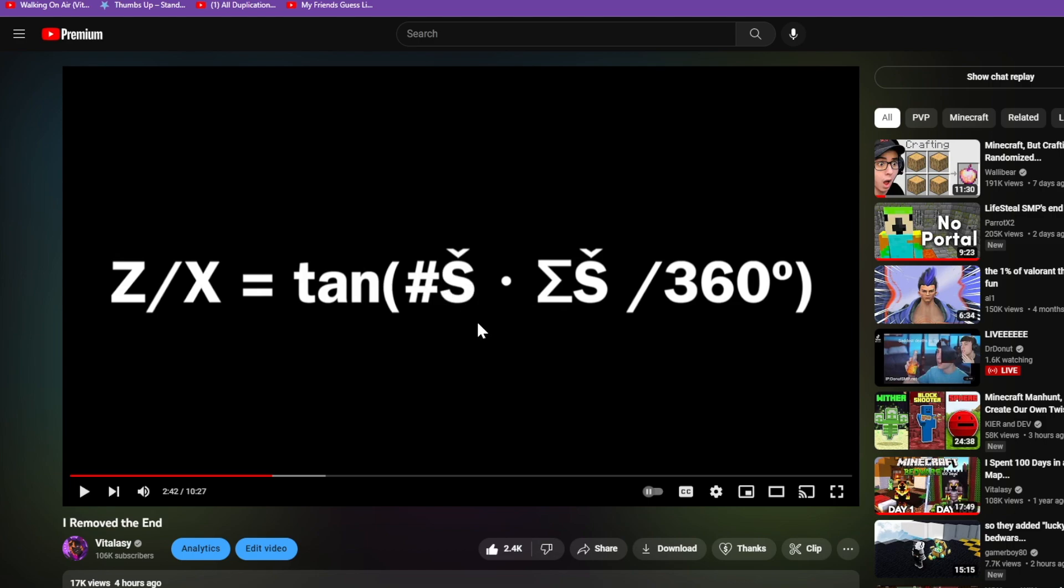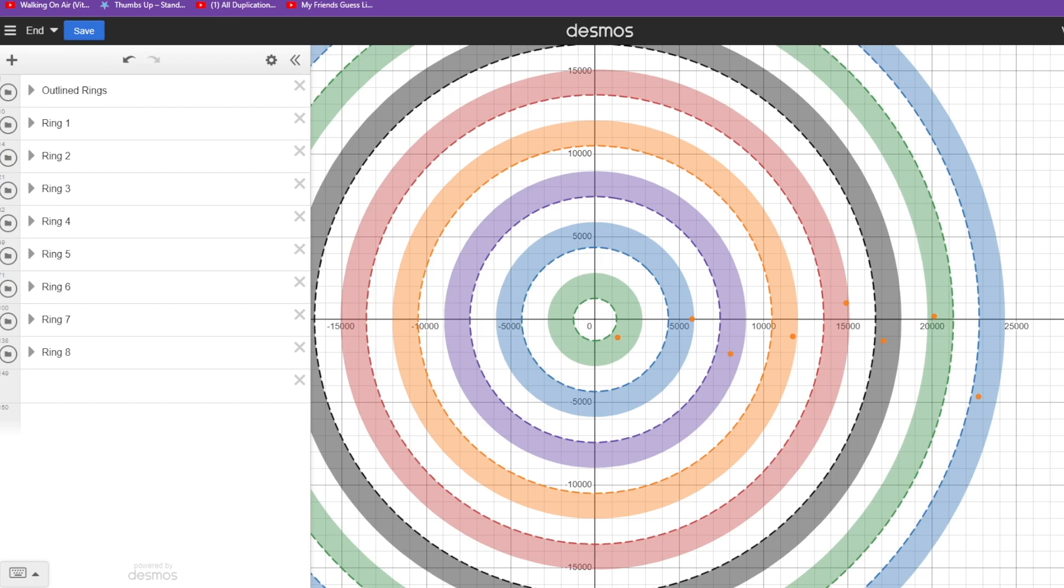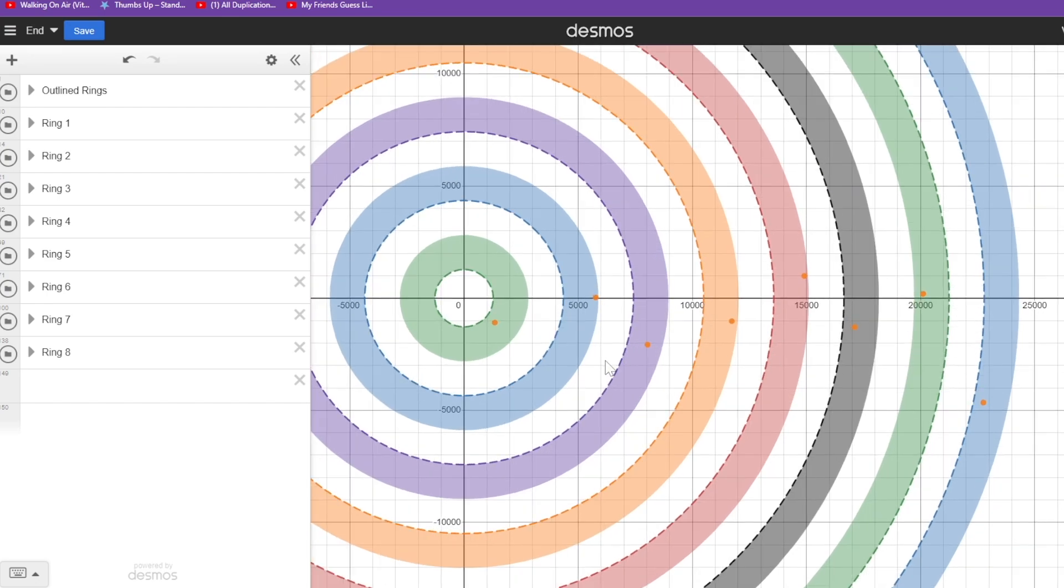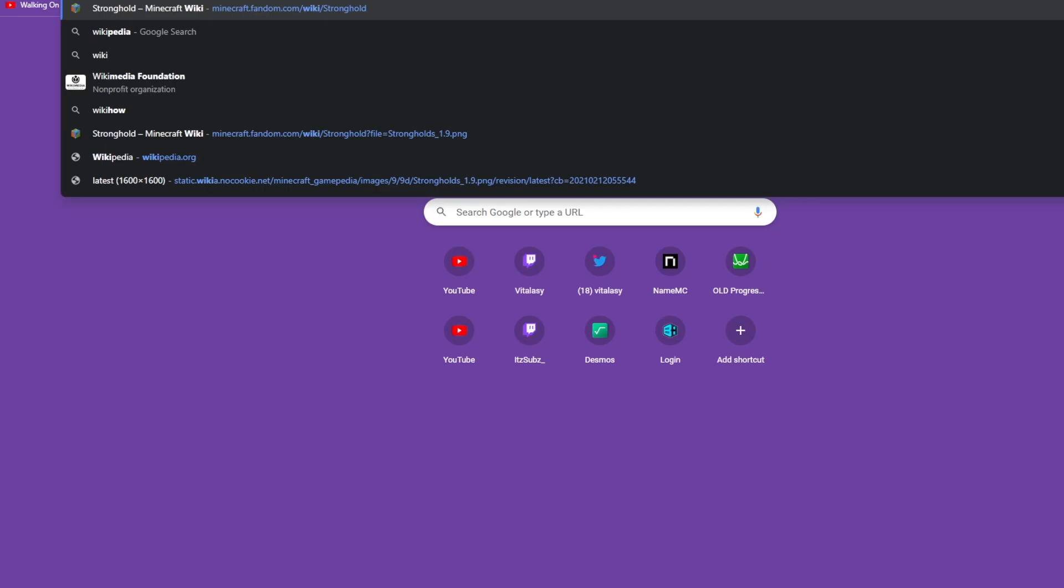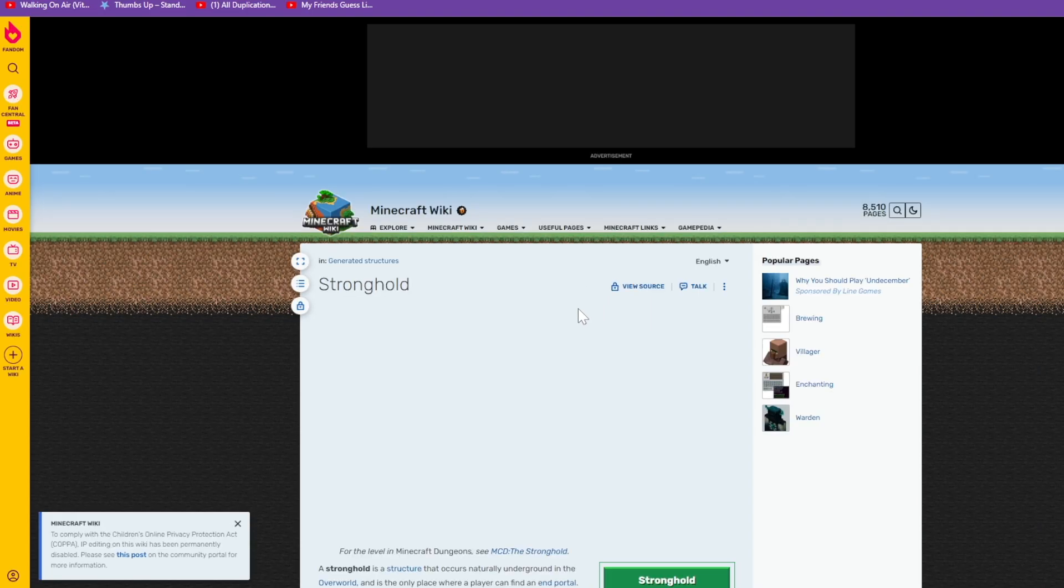Number sign S is what number stronghold you're on and how you define which number stronghold you're on is by assigning it a number. For me to make things simplest, I chose whichever point was closest to the X-axis and made all those number one of their respective rings.